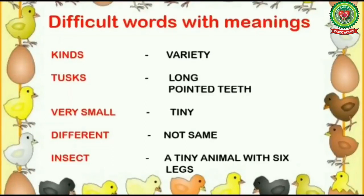The first word is K-I-N-D-S, kinds. Kinds means variety — V-A-R-I-E-T-Y. The next word is T-U-S-K-S, tusks. Tusks mean long pointed teeth.